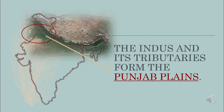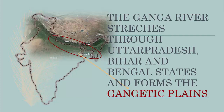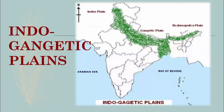The Indus and its tributaries form the Punjab Plains. The Ganga River stretches through Uttar Pradesh, Bihar, and Bengal states and forms the Gangetic Plains. Together, the Indus Plains and the Gangetic Plains are called the Indo-Gangetic Plains, also known as the Indus-Ganga Plains and the North Indian River Plains.